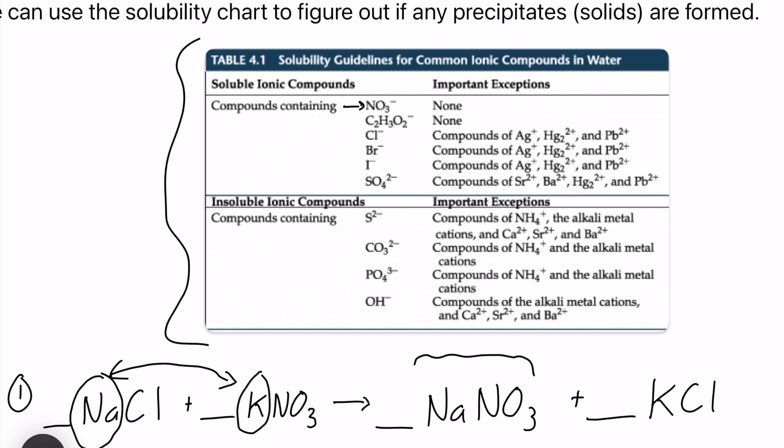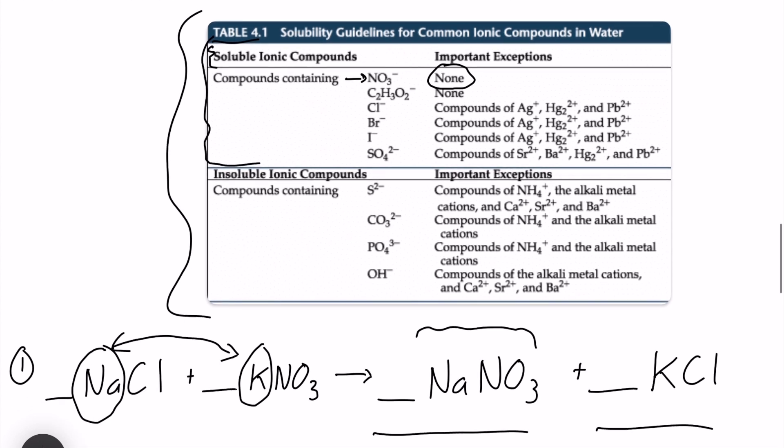I see nitrate right there at the very top. And above it, it says soluble ionic compounds. So since nitrate is in this soluble ionic compound section, this whole section right here, and there are no exceptions whatsoever, we know that NaNO3 will be soluble. And we are going to write down AQ for aqueous, which means dissolved in water or, in other words, soluble.